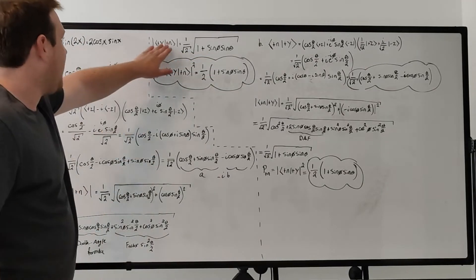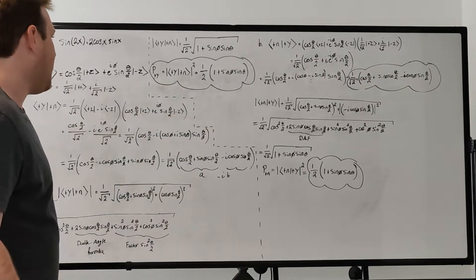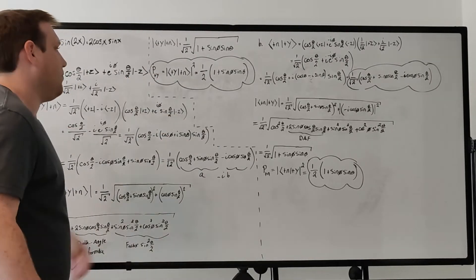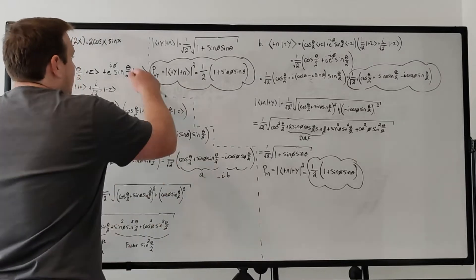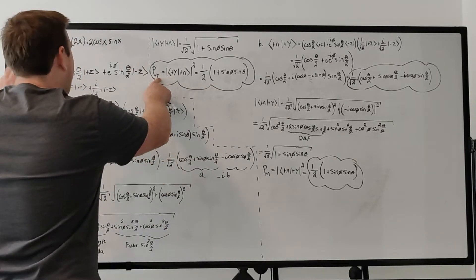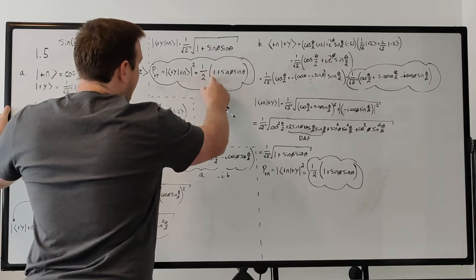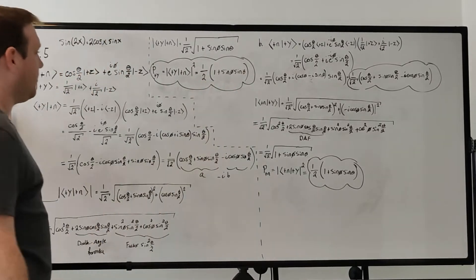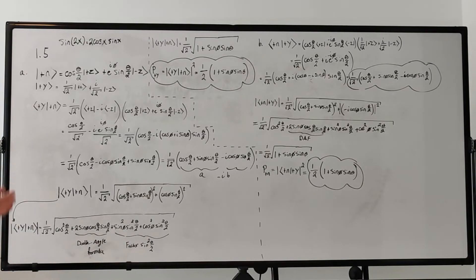That is the magnitude. To get the probability, we square that magnitude, which is straightforward. The probability of finding our state in the |+y⟩ state is (1/2)·(1 + sine(φ)·sine(θ)). That's really it — simple as that. It's pretty straightforward, just a lot of trig work.